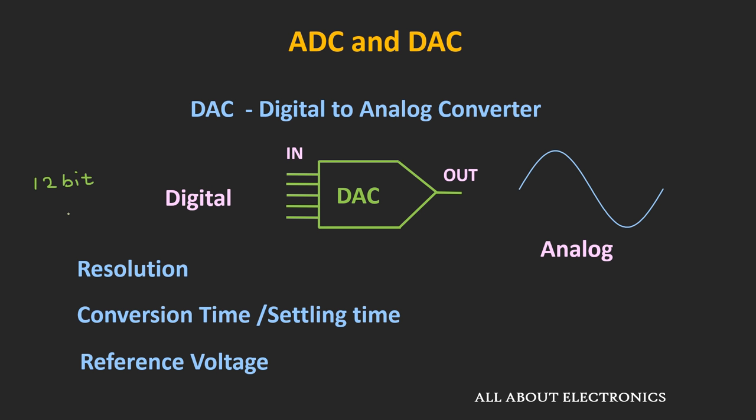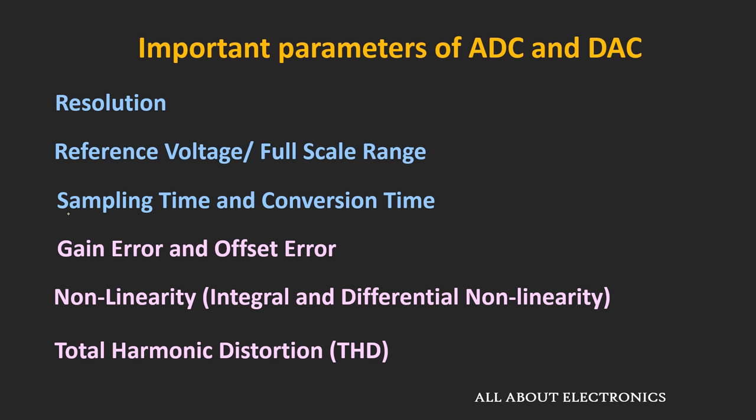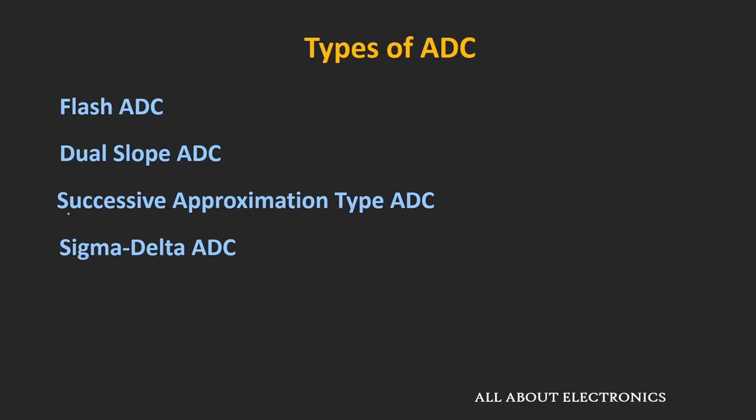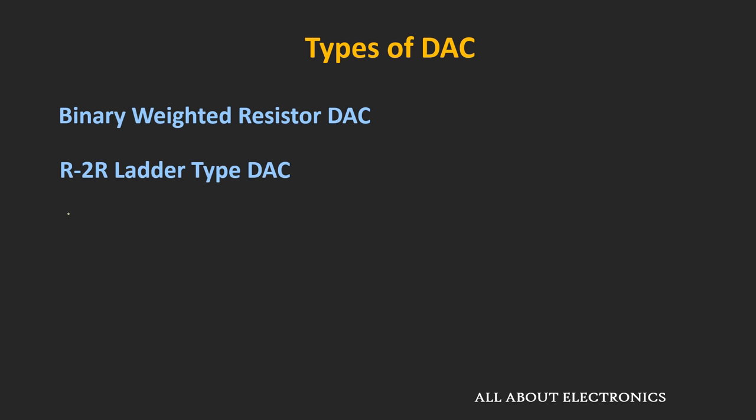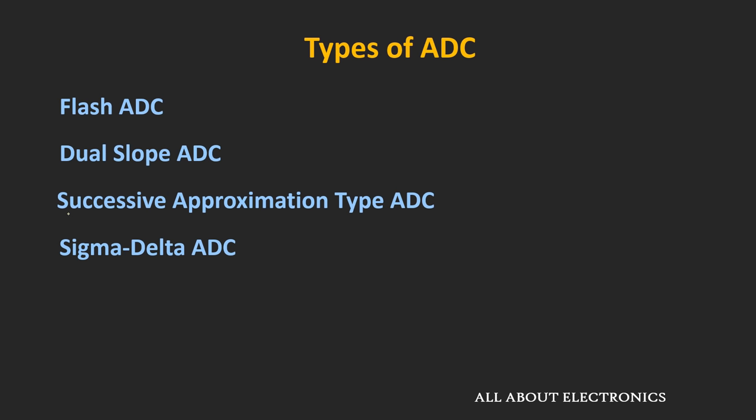Apart from these parameters, here is the list of other important parameters for the ADC and DAC, which includes gain and offset error, non-linearity, and total harmonic distortion. We will learn more about all these parameters in upcoming videos. ADC and DAC can be designed in different ways, and each design has some advantages — some ADCs provide better resolution while others have faster conversion time. In upcoming videos, we will cover all these types of ADCs and DACs.